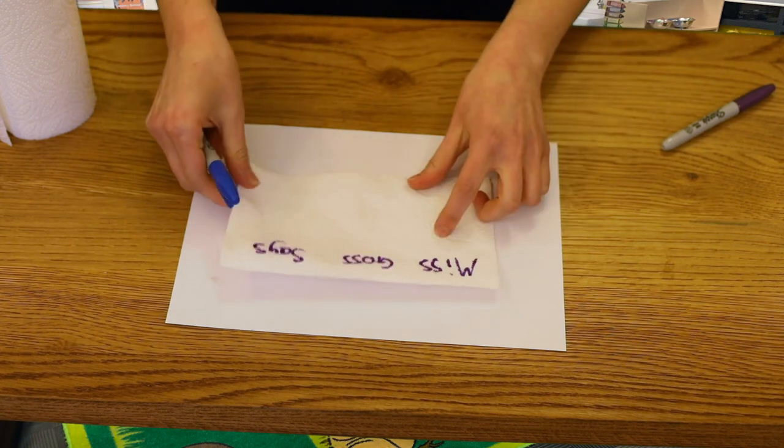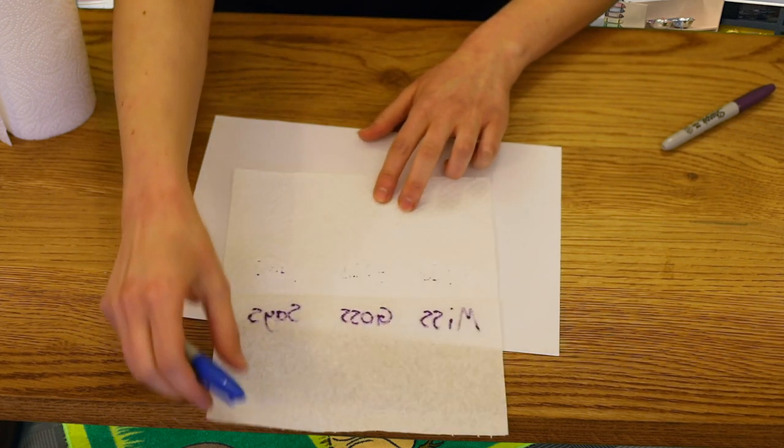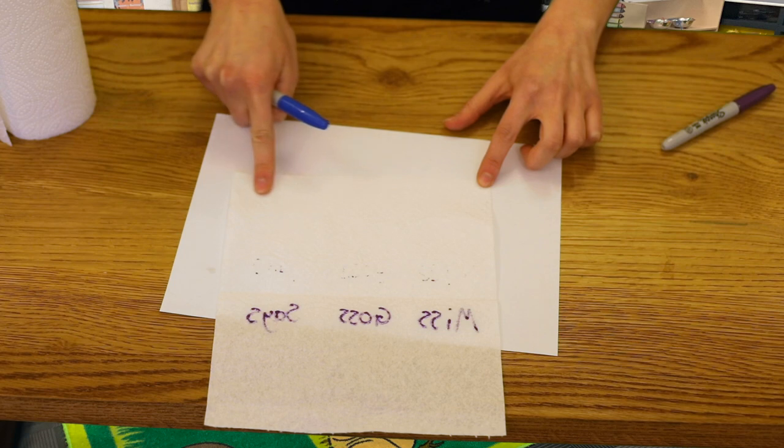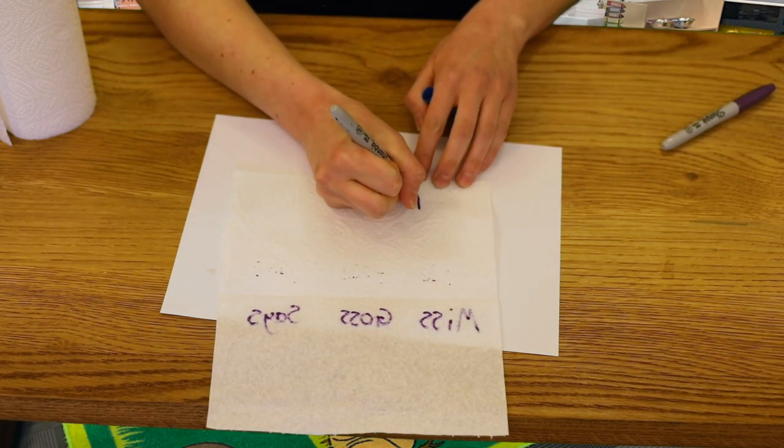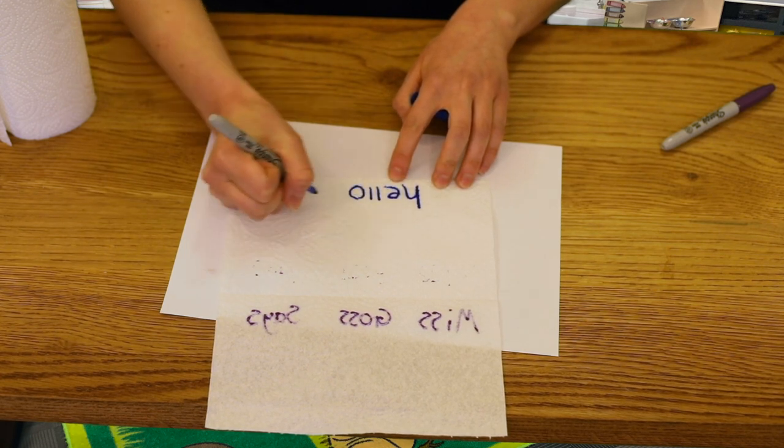So I'm going to open it up. And I'm going to write my secret message along the bottom, along the bottom here. Today I'm just going to write Miss Goss says, and then the secret bit is going to be hello. I'm going to draw a little face.